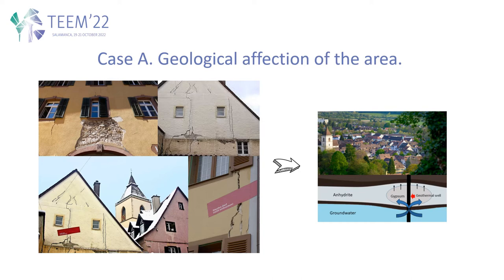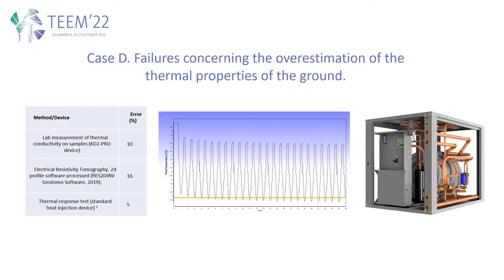Case A means that the installation of the geothermal system may cause geological affixion to the area. As can be seen in the pictures, this causes damage to the buildings above. Case D means that by overestimating the thermal properties of the ground, we can lose control of the thermal properties of the fluid from the well field. This may cause malfunction in the heat pump.